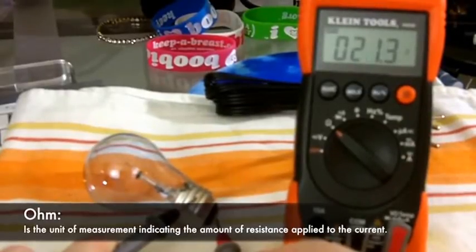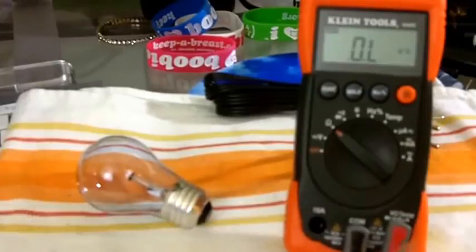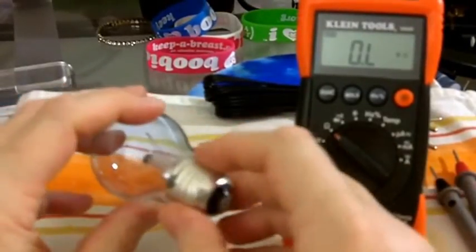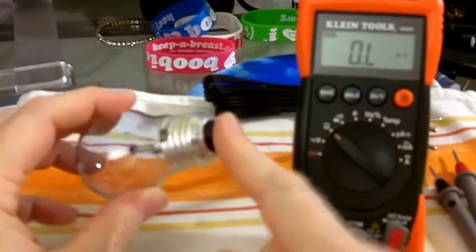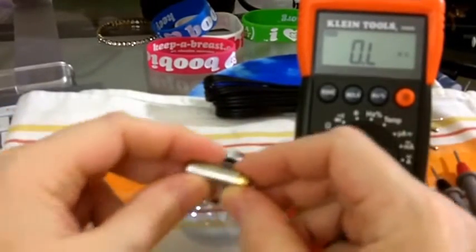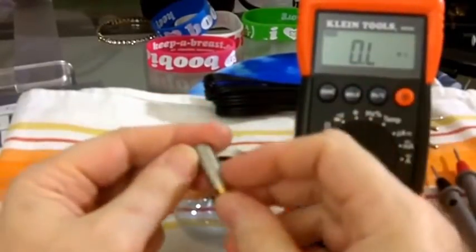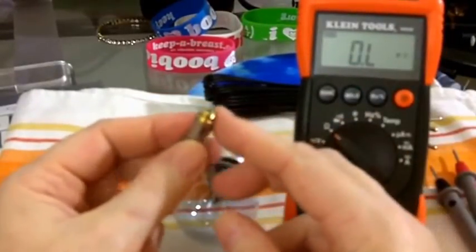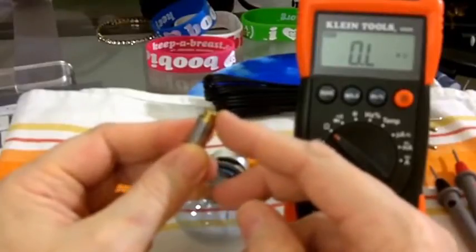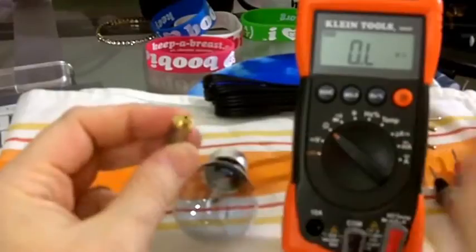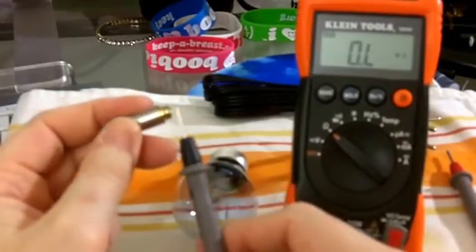So same principle, and we will take a look at a 510 atomizer. Keeping in mind, threads are the black, post is the red. Here is the LR510, and the threads are smaller. So this is kind of hard to do while you are holding the atomizer. So black to the outside threads.